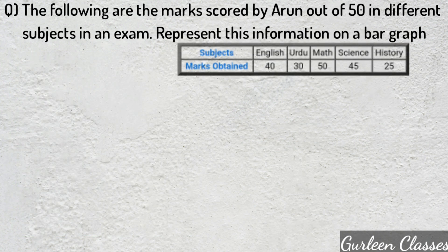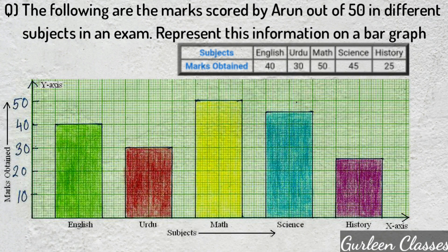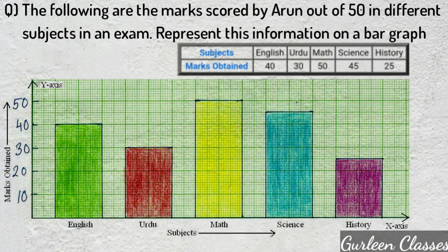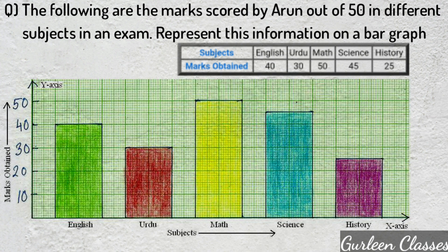Next question: the following are the marks scored by Arun out of 50 in different subjects in an exam. Draw the bar graph. On the x-axis are subjects and on the y-axis are marks obtained. English: 40, Urdu: 30, Maths: 50, Science: 45 — lying between 40 and 50, History: 25 — lying between 20 and 30. I hope students are now able to draw bar graphs.